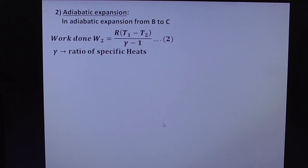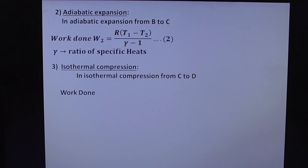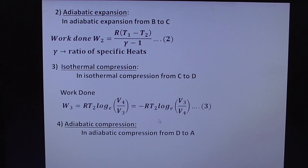Adiabatic expansion: what is work done? R(T₁ - T₂)/(γ - 1), where γ is the ratio of specific heats. The next one, isothermal compression - yes, I told you this is also in the form of log. One and three equations are involved here. The next, D to A: observe here, the second and fourth equations are both the same. To get the resultant work done, you have to add all these, so two and four get cancelled.